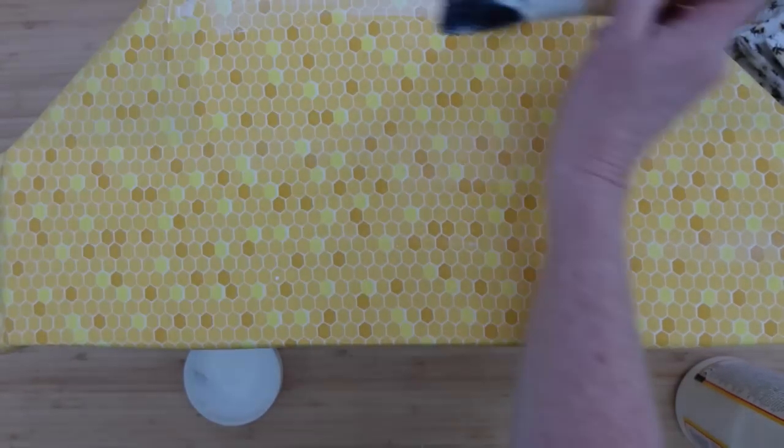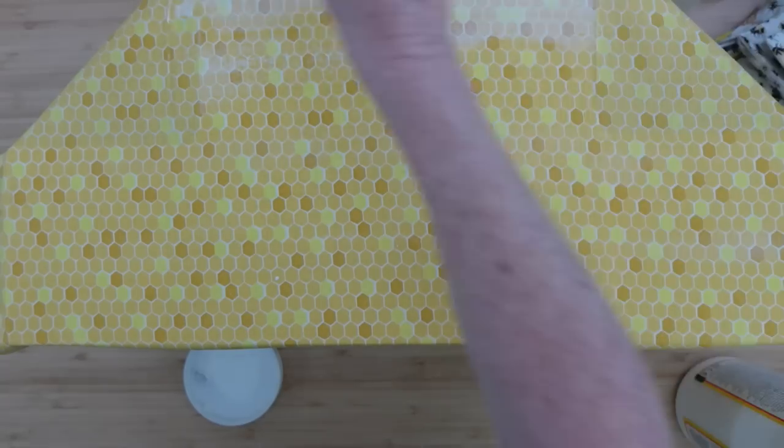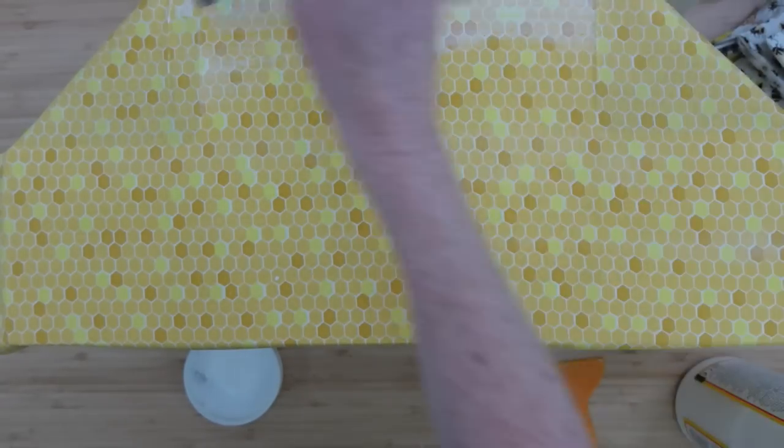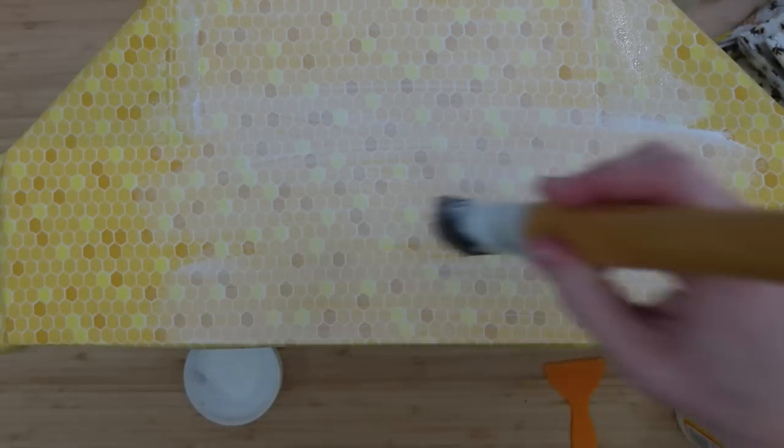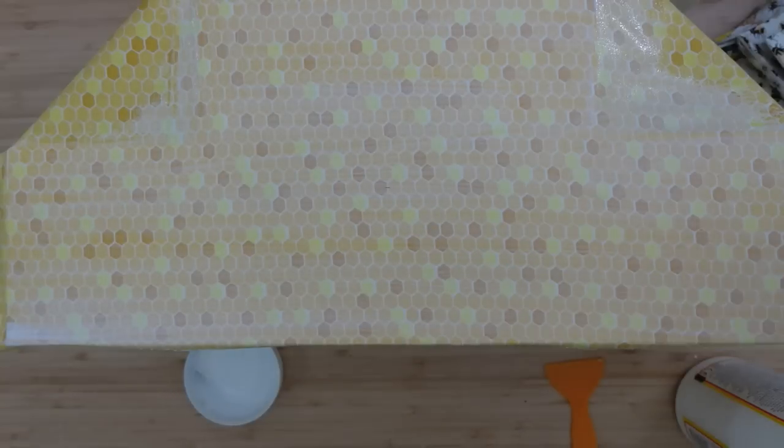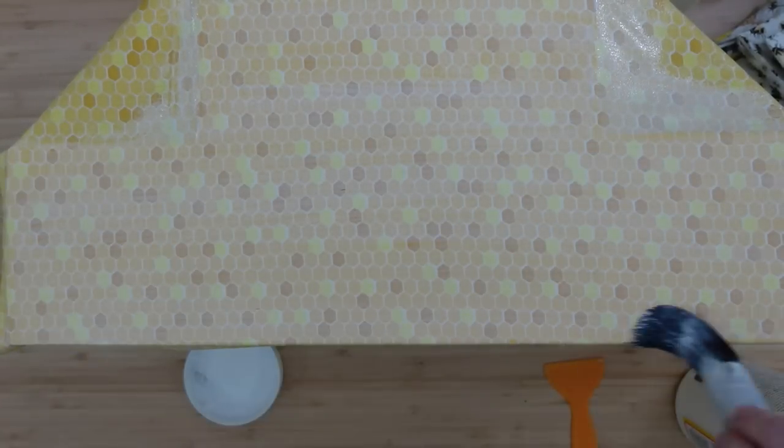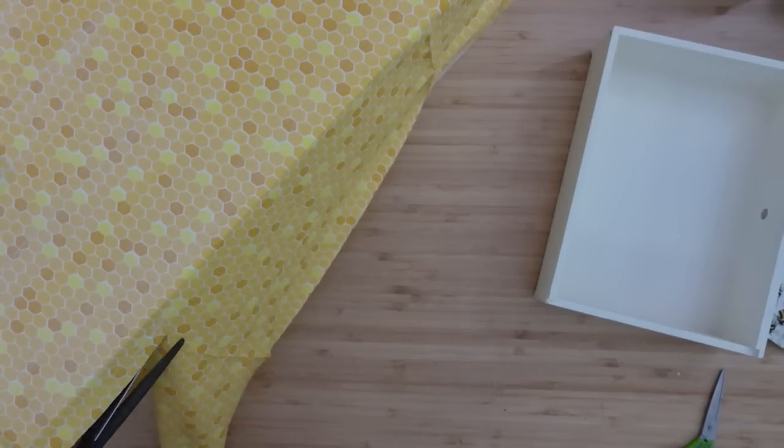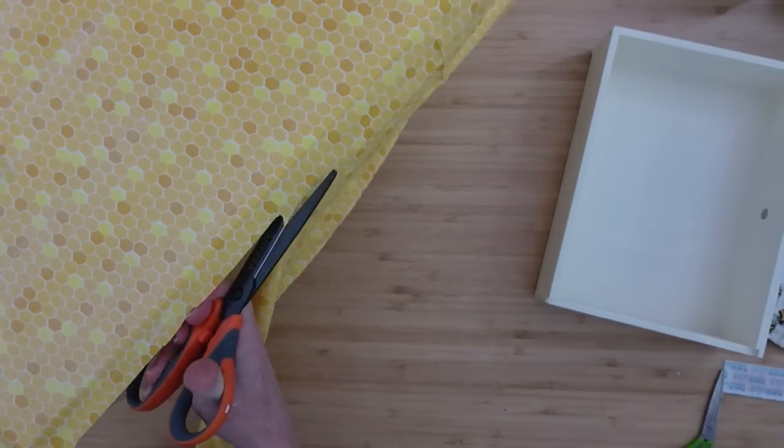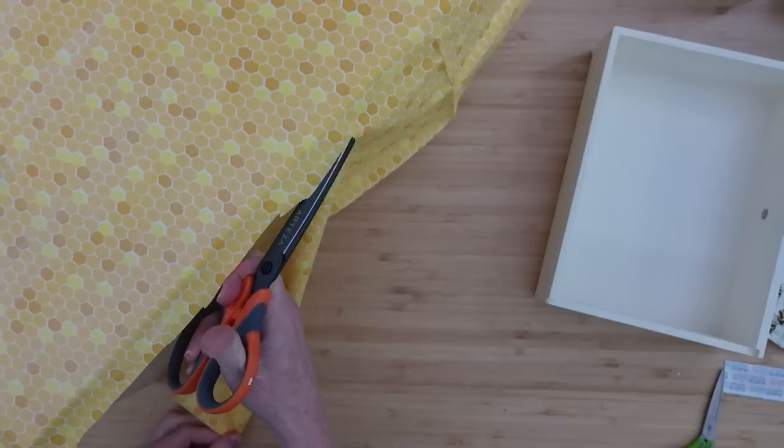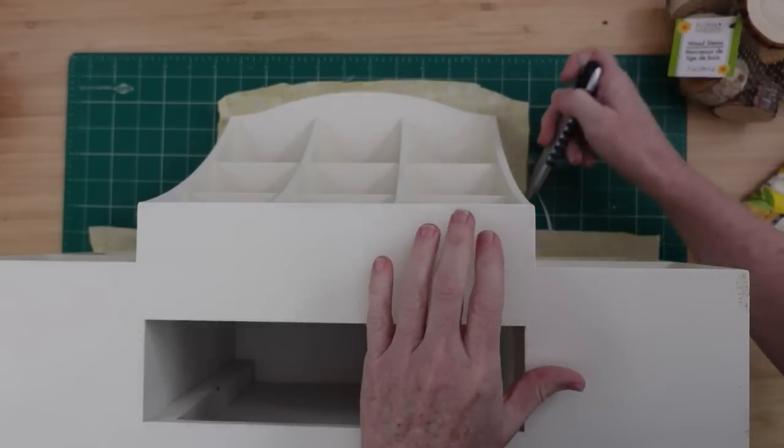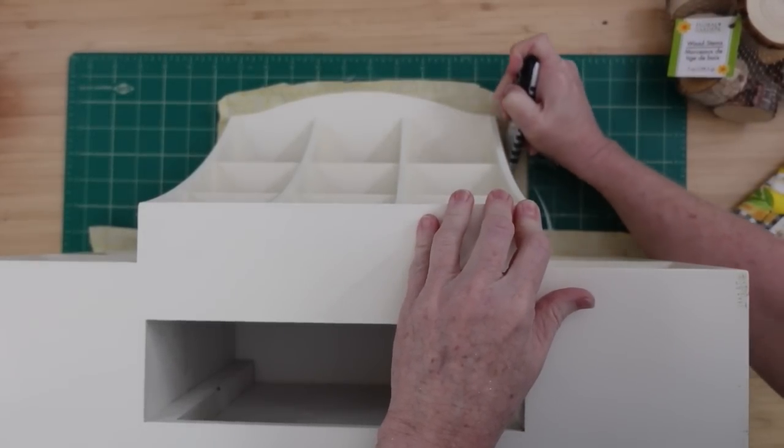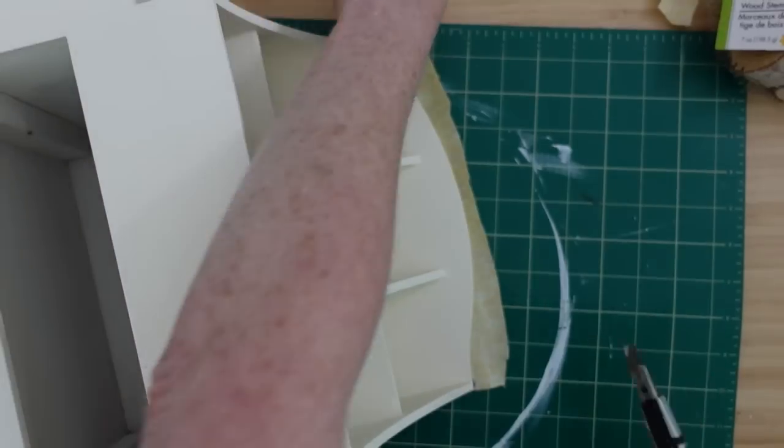And then I am going to grab that Mod Podge when it's nice and smooth and put a nice substantial coat on the whole thing. And when you go to the edges when you're using fabric like this, be sure you don't just stop at the edge. Kind of overlap a little bit like you saw me doing. Then I'm going to go back in and cut off some of the excess just to get it out of the way and make it a little easier to work with.